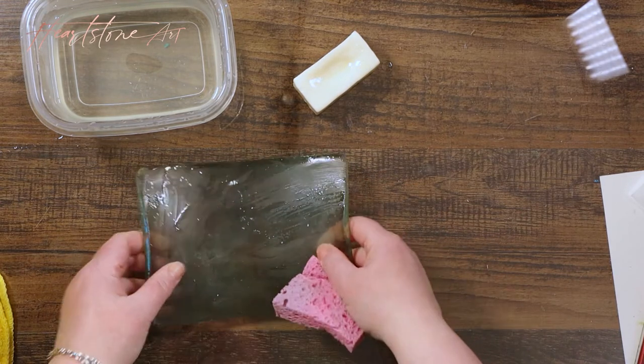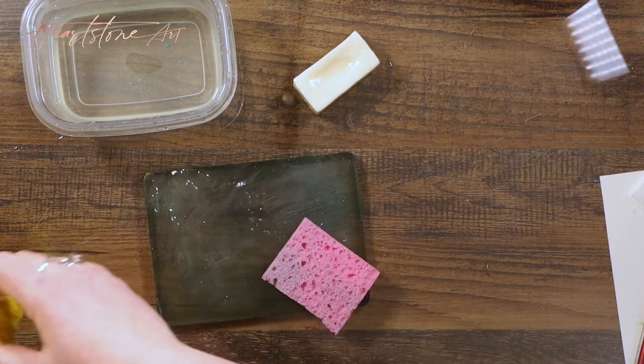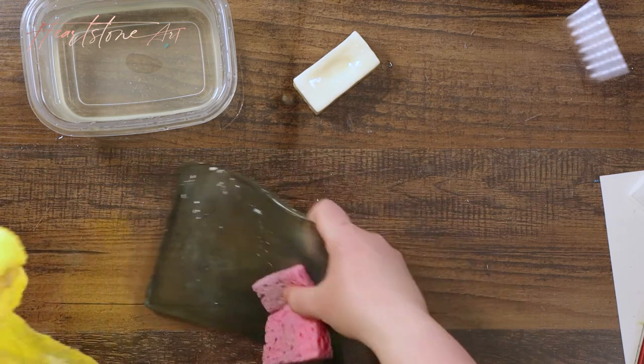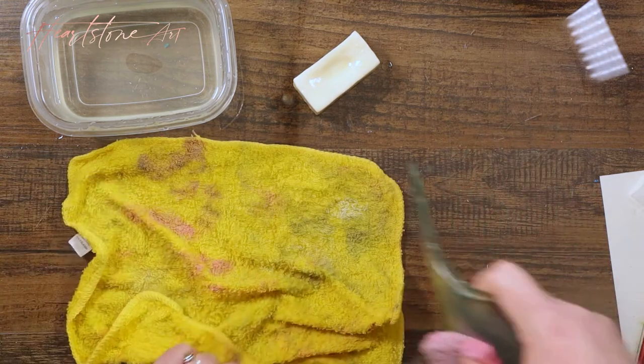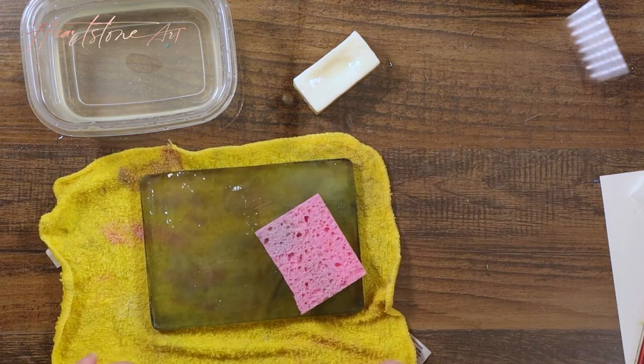At this stage I'm finding that the plate has got water underneath so it's slipping around a little bit, so I'm going to put that damp dish towel underneath just to stop it sliding around.